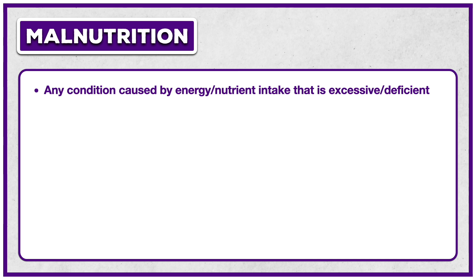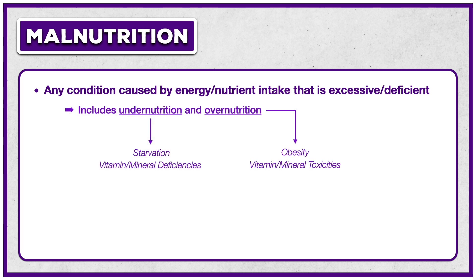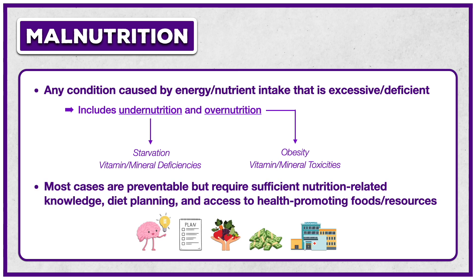One last term to cover in this section is malnutrition. Unlike a lifetime of nourishment and the diet-health connection, this term is found in dictionaries and other textbooks. Malnutrition can be loosely defined as any condition caused by energy or nutrient intake that is excessive or deficient. It includes undernutrition and overnutrition. Examples of undernutrition include starvation and vitamin and mineral deficiencies. Examples of overnutrition include obesity and vitamin and mineral toxicities. All of these can be harmful to health, so malnutrition must be avoided through the proper planning and execution of a healthful diet pattern. Most cases of malnutrition are preventable but require sufficient nutrition-related knowledge, diet planning, and access to health-promoting foods and resources — meaning socioeconomic status and access to health care are always tied to risk.